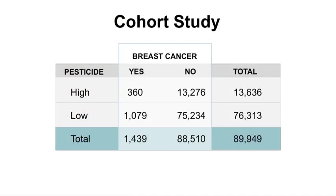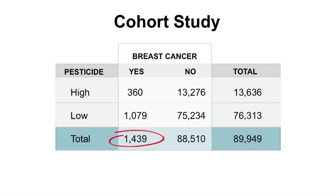Here's our cohort study data, which would be great. But what's the problem with our cohort study? Quantifying pesticide levels in the blood is very expensive — it's not practical to analyze all 89,949 blood samples. To be efficient, analyze blood on all cases — 1,439 — but only analyze blood from a small sample of the women who did not get breast cancer, say two times as many cases, or 2,878.